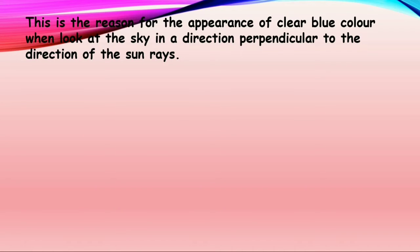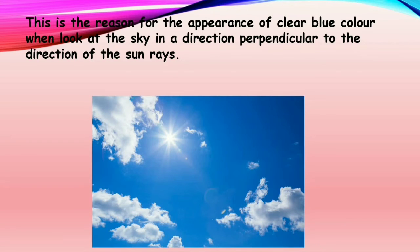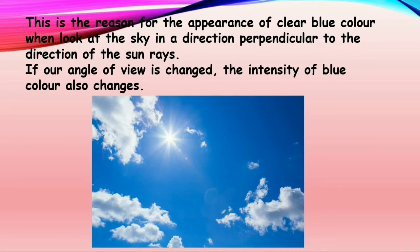This is the reason for the appearance of clear blue color when you look at the sky in a direction perpendicular to the direction of the sun rays. So that is why the blue color of the sky appears. If our angle of view is changed, the intensity of blue color also changes.